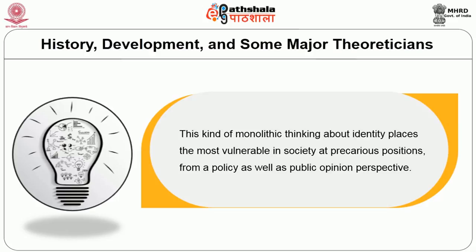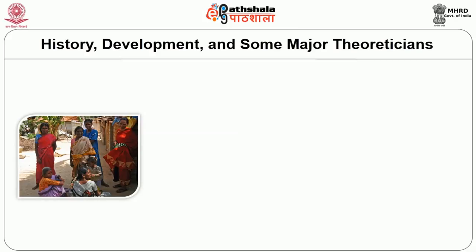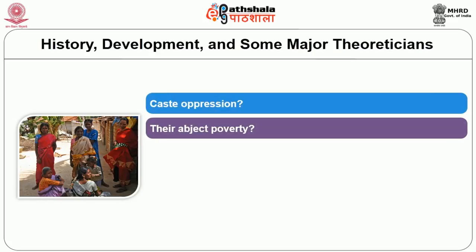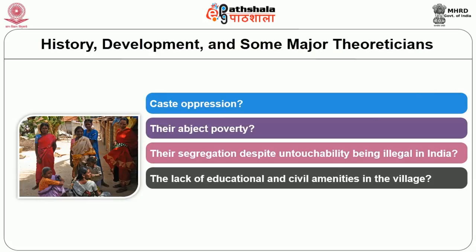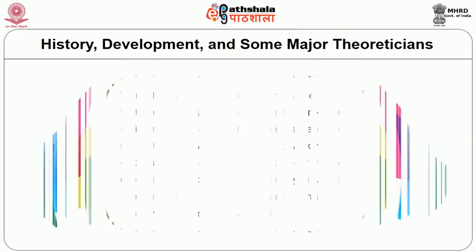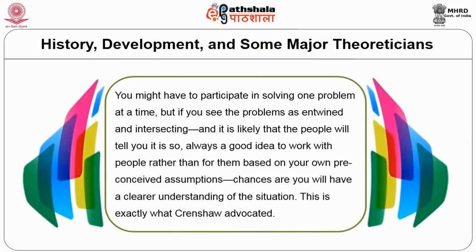When you think about a poor village of mostly Dalit people as an activist or a policy maker, will you focus on the village's caste oppression, their abject poverty, their segregation despite untouchability being illegal in India, or the lack of educational and civil rights amenities? Why not everything all at once? You might have to solve one problem at a time, but if you see the problems as entwined and intersecting, it is likely that the people will tell you it is always so. It is always a good idea to work with people rather than for them based on your own preconceived assumptions.